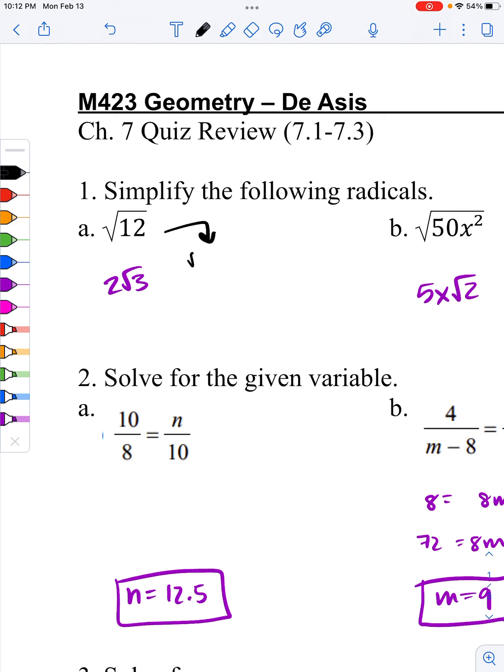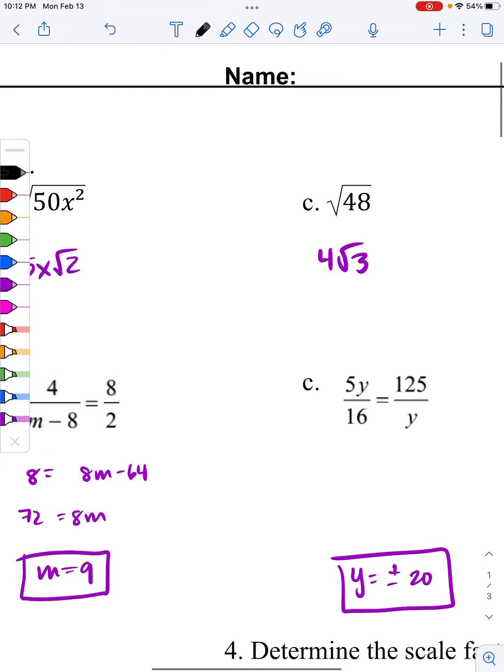Something like root of 12 can be simplified or broken down to root of 4 times root of 3, and we know what the root of 4 is, that is 2, so that's how we get 2 root 3.